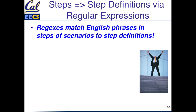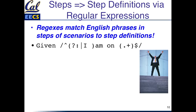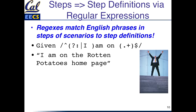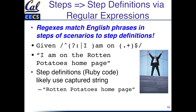The magic between the steps and the step definitions is that you use regular expressions. We write regular expressions, which we talked about earlier, and they're going to match those English phrases to map them onto the testing code written in Ruby. For example, given I am on the Rotten Potatoes homepage — there's the regular expression that's going to match this, using a captured string in parentheses, remembering that it's the Rotten Potatoes homepage, which we'll use in the step definitions.